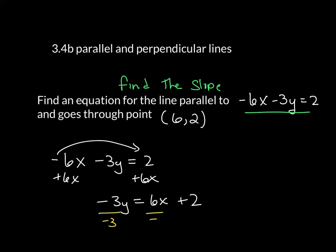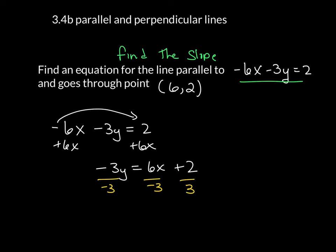Then I want to divide everything through by the coefficient in front of y, which in this case is negative 3. Negative 3 over negative 3 is just 1y. 6 divided by negative 3 is negative 2, and that becomes negative 2x plus the y-intercept.